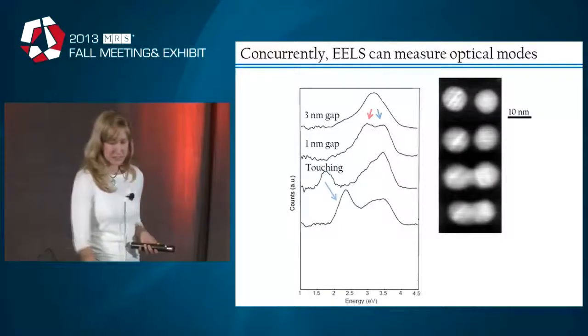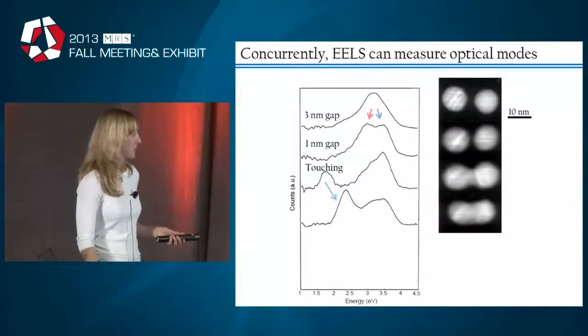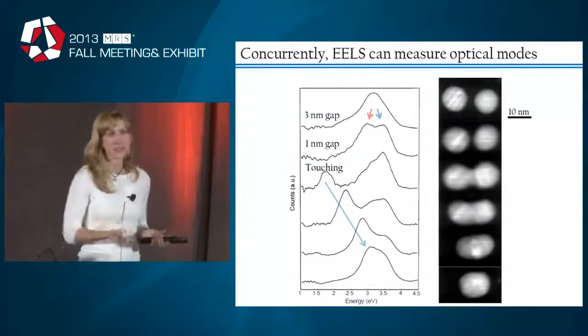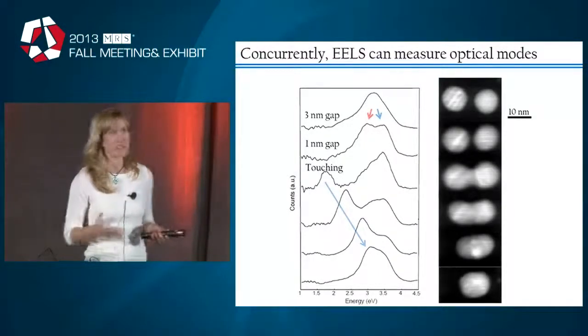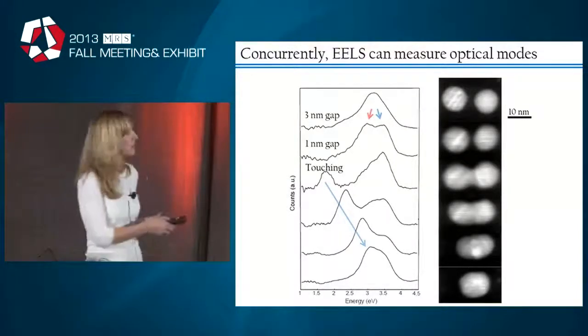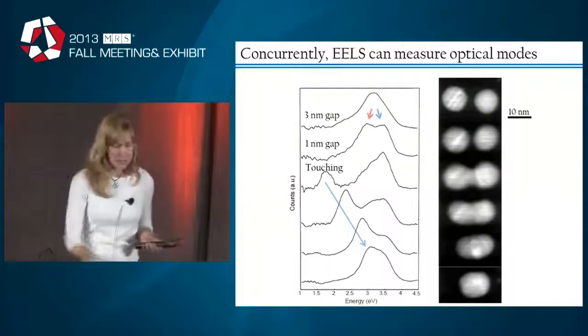And then as the particles converge even more, this charge transfer mode exhibits a little bit of a blue shift until eventually we have a single particle that's volume preserving. So here the particle has dimensions on the order of about 13, 13.5 nanometers compared to our individual 10 nanometer nanoparticles.